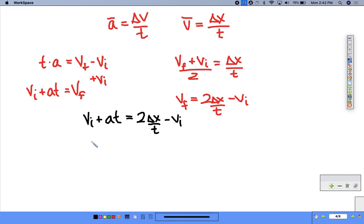Now we want to keep combining terms and moving forward. So I'm noticing vi on both sides. So if we add vi, I'd have 2 vi over here plus at equals 2 delta x over t.